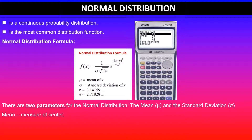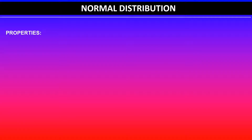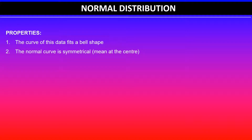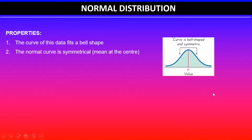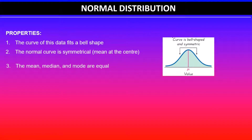You already know that mean is a measure of center and standard deviation is the measure of spread. For this achievement standard you will need to be familiar with the properties of normal distribution, because sometimes you will need to justify the use of normal distribution and you can use some of these properties. The curve is bell-shaped, and the normal curve is also symmetrical, with the mean at the center as shown in this graph. The central value is the mean, and the mean, median, and mode are all equal in this distribution.